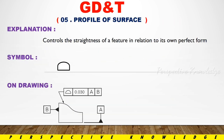The profile of surface controls the straightness of a feature in relation to its own perfect form. There is a component and a profile in it. That is the profile of surface.